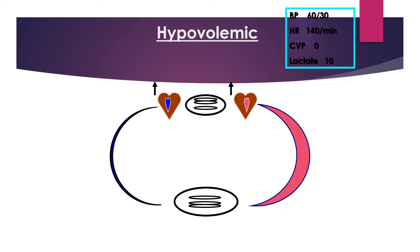In hypovolemic shock, there is low blood pressure, heart rate is increased, CVP is low, and lactate is high.